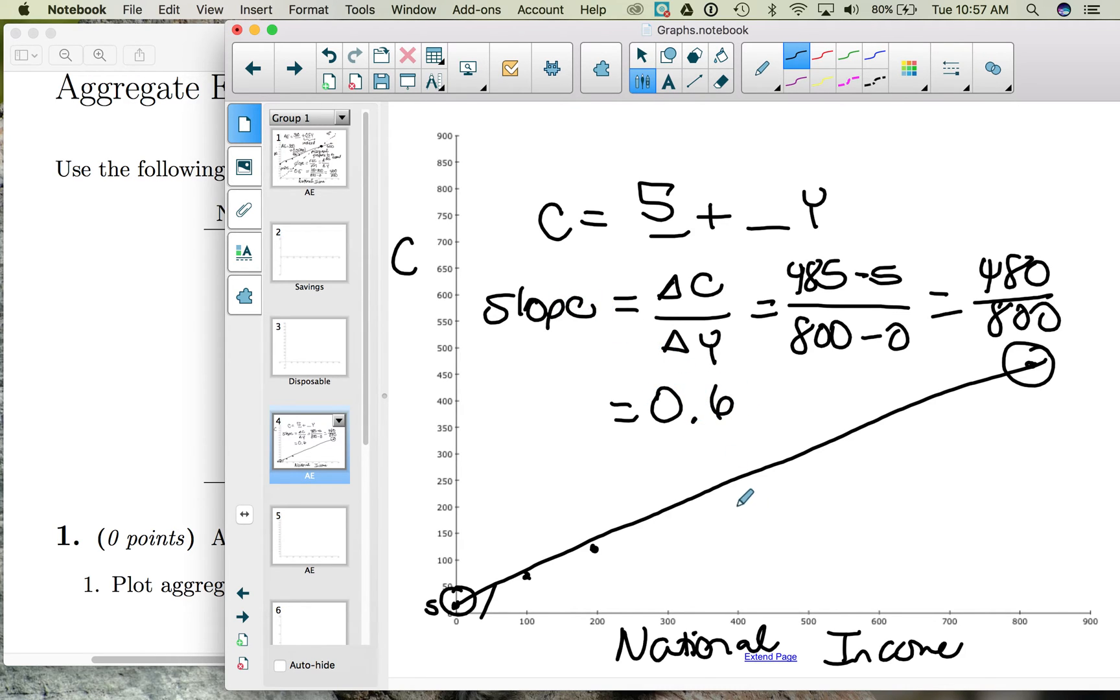So 480 divided by 800 is 0.6. This slope has a name. It is called the marginal propensity to consume.